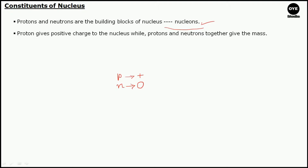So what will be the total charge of any nucleus? If the charge of a single proton is plus E, then the total charge of the nucleus Q is given by plus E multiplied by the number of protons, which is the atomic number Z. Therefore, the total charge of the nucleus is plus ZE, where Z is the atomic number and E is the charge of a single proton.